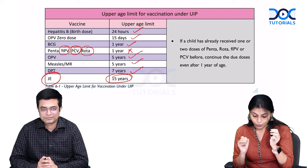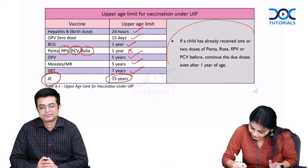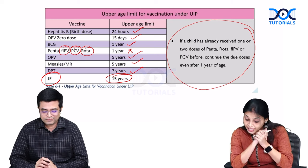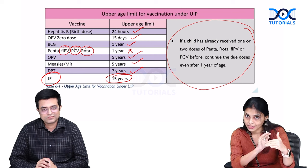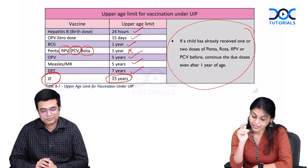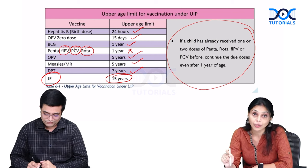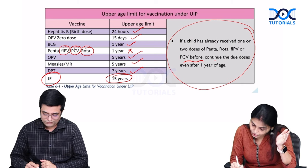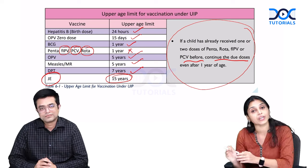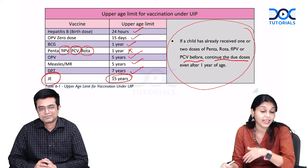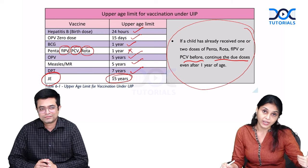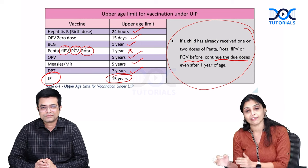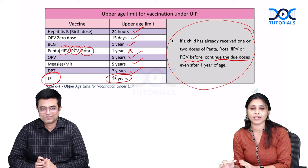An important point: if the child has already received one or two doses of Penta, Rota, IPV, or PCV before one year and comes to you after one year, continue the due doses even after one year of age. Just complete the immunization schedule.